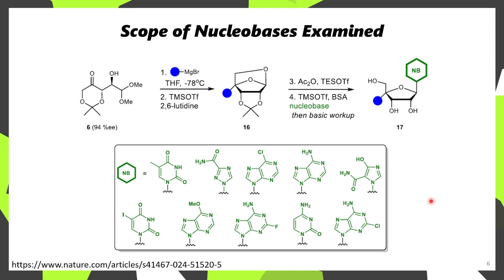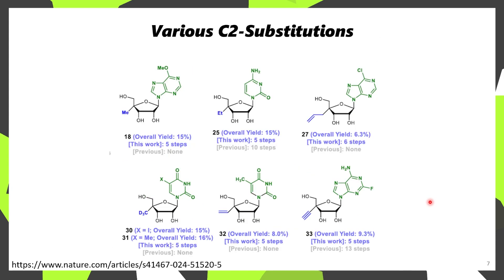Nucleosides play an important role in antiviral therapy, so it's possible that one of these could get picked up and used for the development of new pharmaceuticals moving forward. Not only can you add methyl groups in this methodology — they even explored ethyl, allyl, vinyl, and propargyl groups, and even deuteromethyl groups, highlighting the value of this methodology.